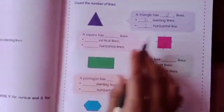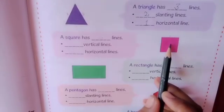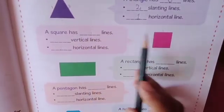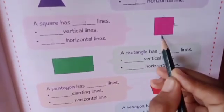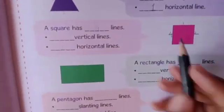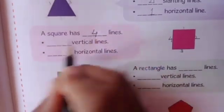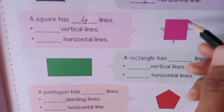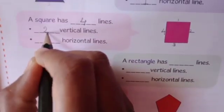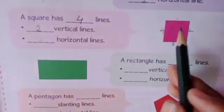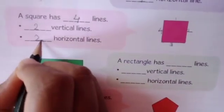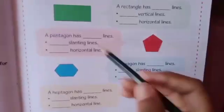Going further, there is another shape — this is a square. A square has four lines: one, two, three and four. It has two vertical lines — write down two vertical lines. And two horizontal lines — one and two. So there are two horizontal lines. Solve the given shapes and fill in the blanks.